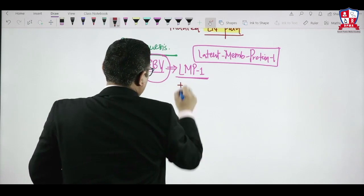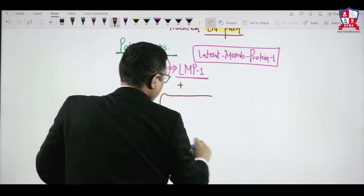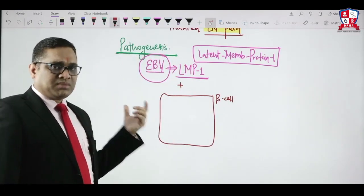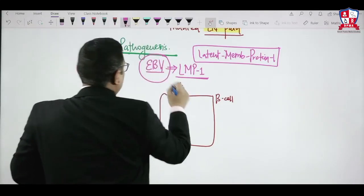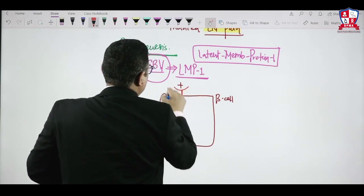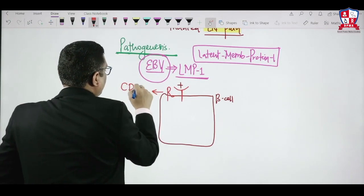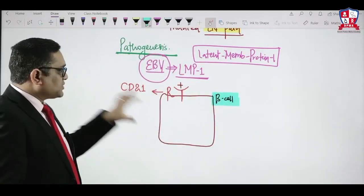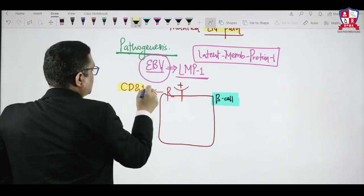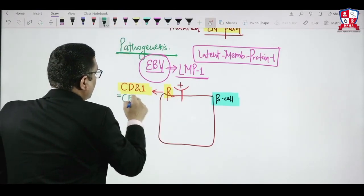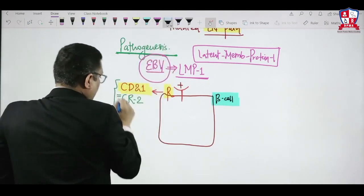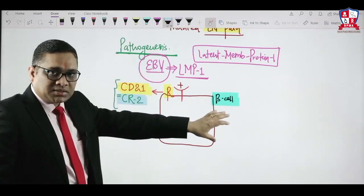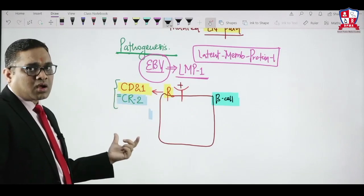LMP1 attaches to B cells via the receptor CD21, also known as complement receptor type 2 — this was an All India exam question in 2015. So EBV attaches to B cells with the help of CD21 or complement receptor type 2 on the B cell surface.